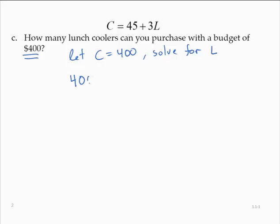Making the substitution, 400 is equal to 45 plus 3L. Solving the equation for L, we would subtract 45 from both sides, yielding 355 is equal to 3L.